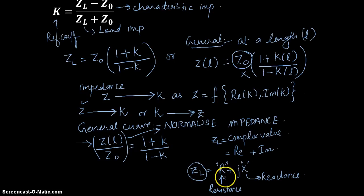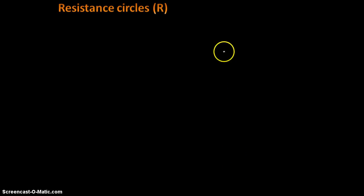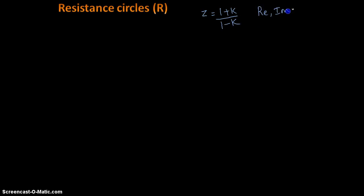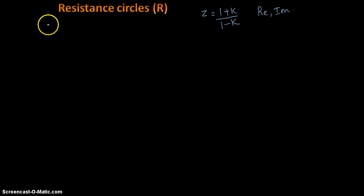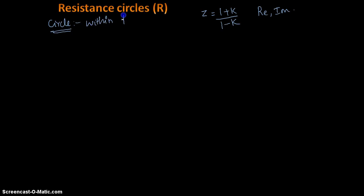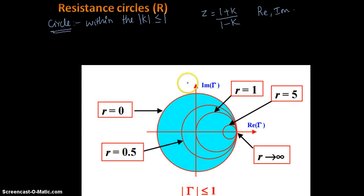So any time we are trying to plot ZL on a Smith Chart we will be representing the real part and the imaginary part. We start again at the equation Z equals 1 plus k divided by 1 minus k, considering the real and imaginary parts. Solving this equation, the final real part values of R are found on a circle. Any value of R tends to fall on a circle within the |k| less than or equal to 1 plane, as shown here.